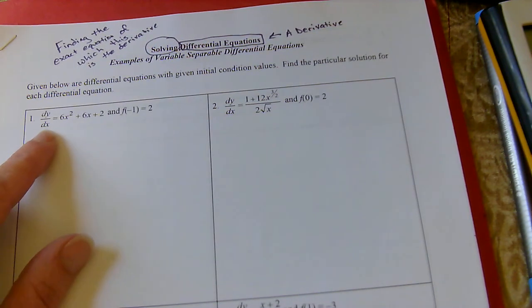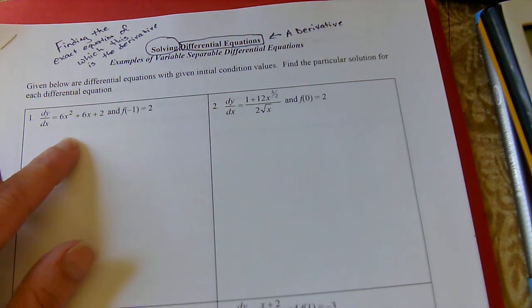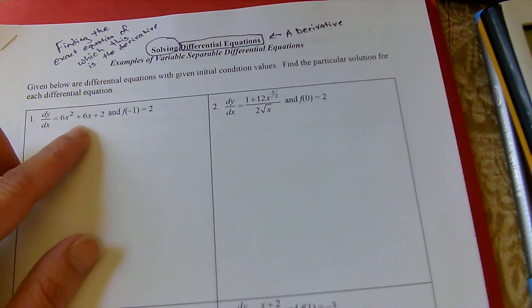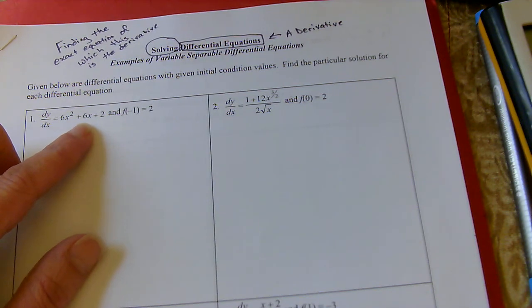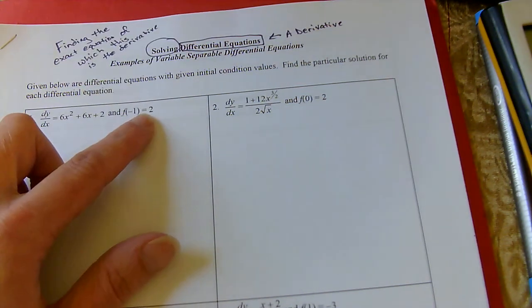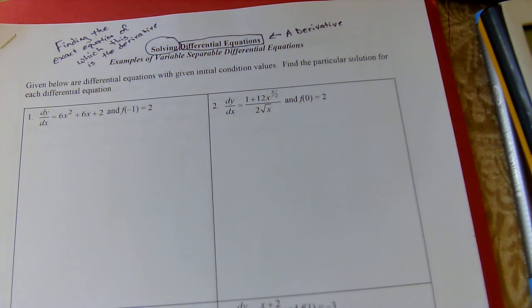We're given a derivative, dy/dx, of 6x squared plus 6x plus 2, and we're given an initial value. These are considered separable differential equations, and you'll see why.